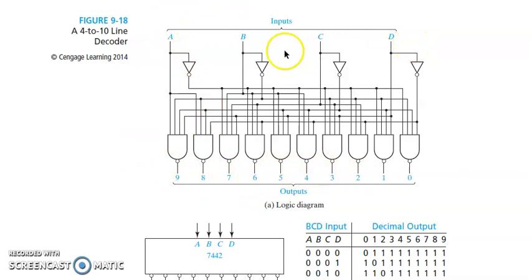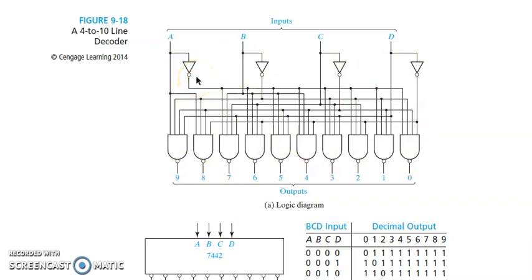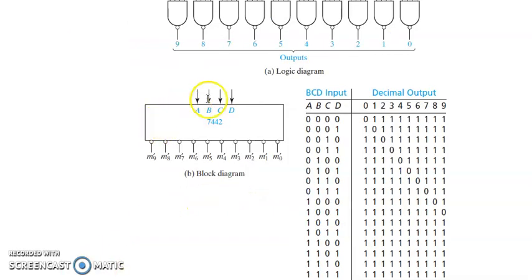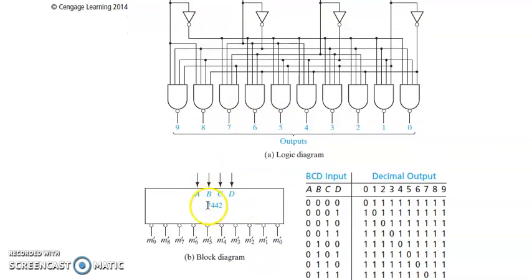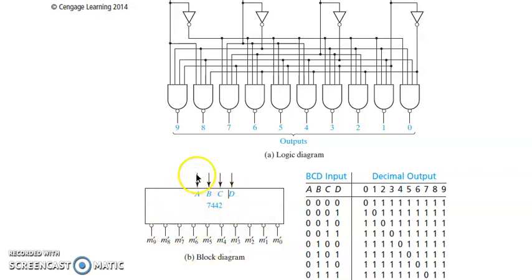What if the input is 1010? That is a don't care — we don't bother about whatever output we get for state 1010. Any states after 9 are not valid states when converting BCD to decimal. Now, let us look at realizing this 4-to-10 decoder using the IC 7442. Whenever we implement a circuit using an IC, we need to know the features of that IC.